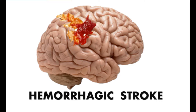To talk about thrombolytics, we need to realize that there are three different types of strokes. We're going to start off with the hemorrhagic stroke, because this is the direct contraindication to giving TPA. We know this is going to make up about 13% of the strokes that we see, according to the 2015 AHA guidelines.